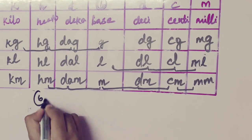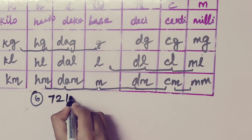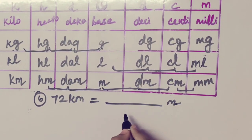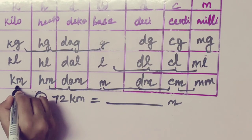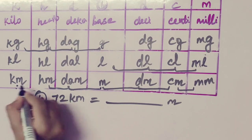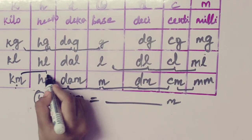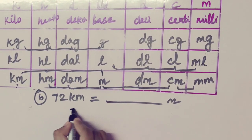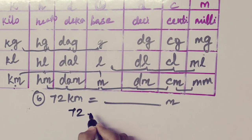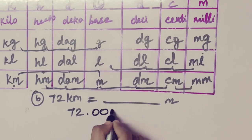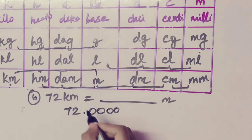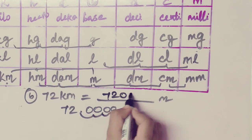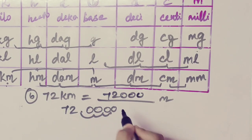Sixth sum: 72 kilometer equal to dash meter. Kilometer is here, meter is here — three times to the right side, so we add three zeroes. The answer is 72,000 meter. 72 kilometers equal to 72,000 meter.